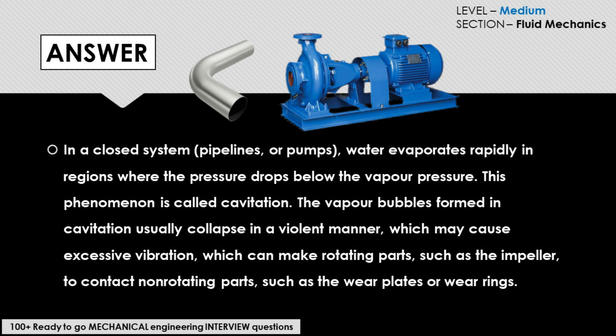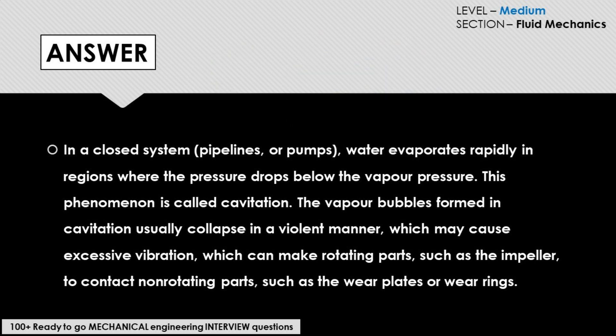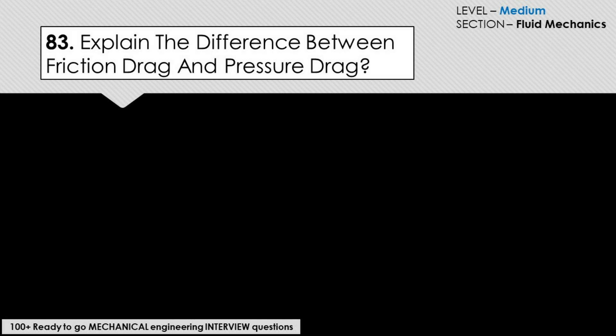The answer: in a closed system like a pipeline or pump, water evaporates rapidly in regions where the pressure drops below the vapor pressure — this phenomenon is called cavitation. The vapor bubbles formed in cavitation usually collapse in a very violent manner, which may cause excessive vibration that can make rotating parts such as an impeller contact non-rotating parts such as the wear plates or wear rings.